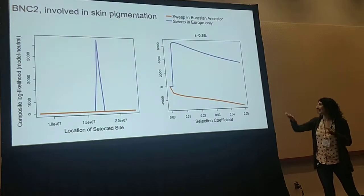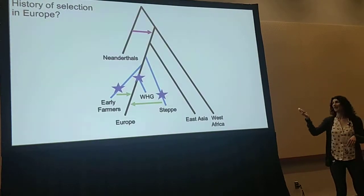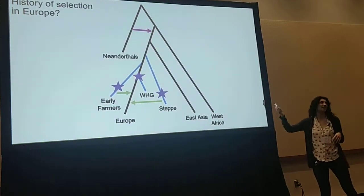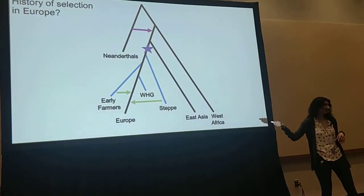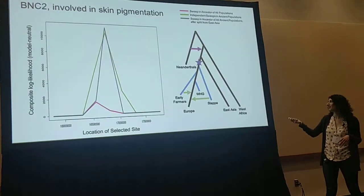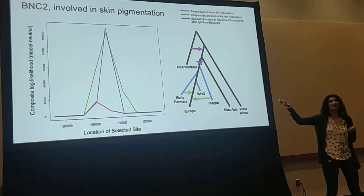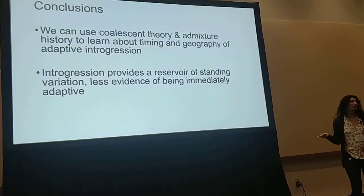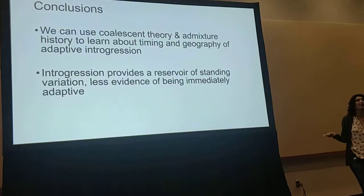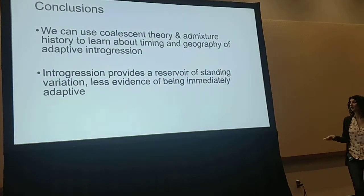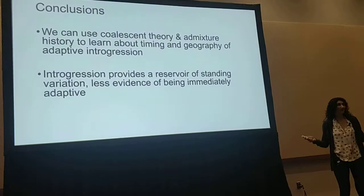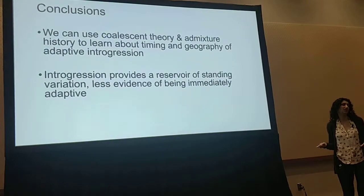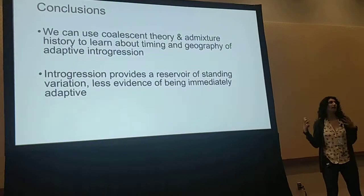The selection coefficient for BNC2 is 0.5%. I also ran this method with ancient populations, distinguishing between independent selection in all the ancient populations and selection in the ancestor of all the ancient populations. What we find is the case of selection in the ancestor of all the ancient populations, but after they diverge from East Asia. So we can use coalescent theory and admixture history to learn about the timing and geography of adaptive introgression. Preliminary results suggest that introgression is mostly providing a reservoir of standing variation that natural selection can act on, rather than being immediately adaptive.